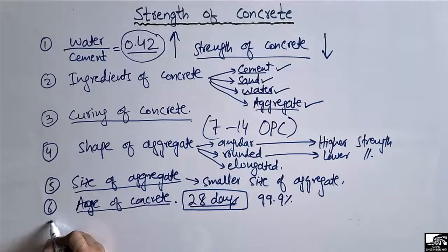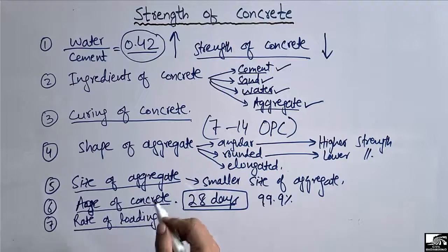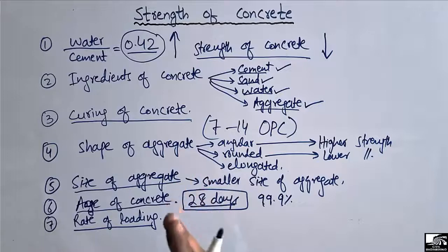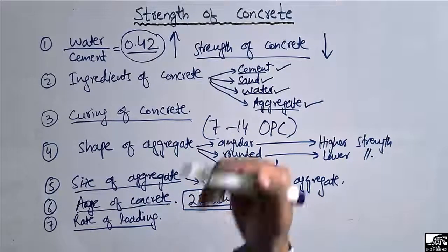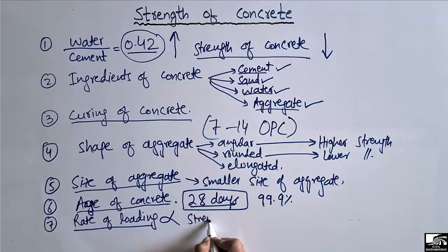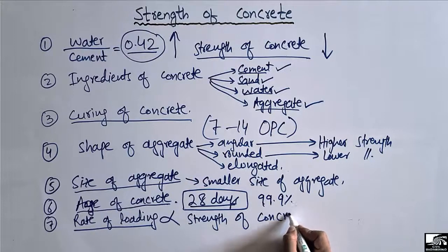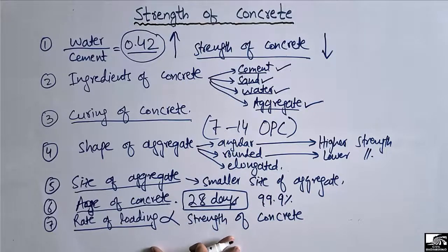The seventh factor that affects the strength of concrete is the rate of loading. The rate of loading means how quickly the load is applied on the concrete structure. If the load is applied quickly, it increases the apparent strength of the concrete. Therefore, the rate of loading is directly proportional to the strength of the concrete — if you increase the rate of loading, concrete strength also increases.